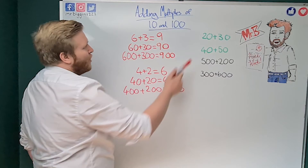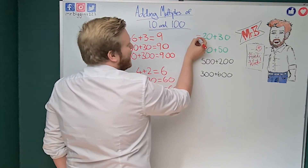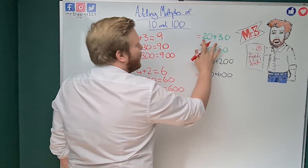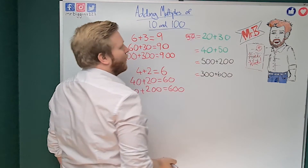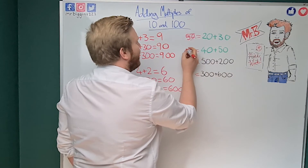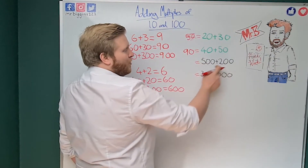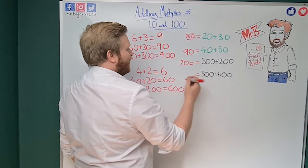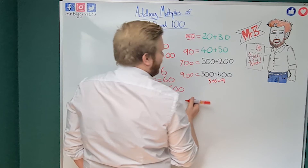We don't have to build it all out every time — we can if we want to double-check — but if we've got these questions we can use a shortcut. For 20 plus 30, just look at two plus three which is five, then add the two zeros: 50. For 40 plus 50, four plus five is nine, add two zeros: 90. For 500 plus 200, five plus two is seven, add two zeros: 700. For 300 plus 600, three plus six is nine, add two zeros: 900.